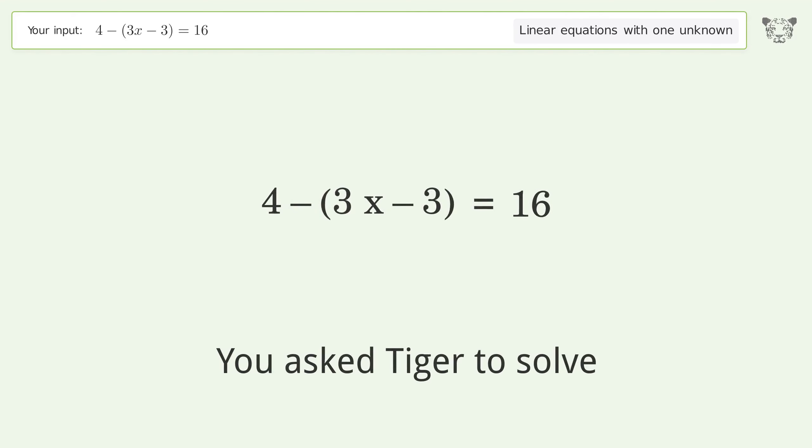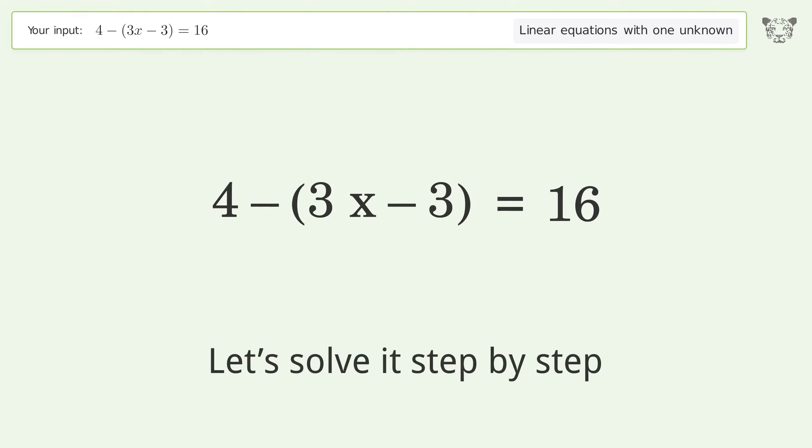You asked Tiger to solve this problem dealing with linear equations with one unknown. The final result is x equals negative 3. Let's solve it step by step and simplify the expression.